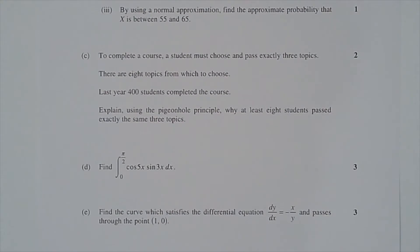Question 12c. To complete a course, a student must choose and pass exactly three topics. There are eight topics from which to choose. Last year, 400 students completed the course. Explain, using the pigeonhole principle, why at least eight students passed exactly the same three topics.